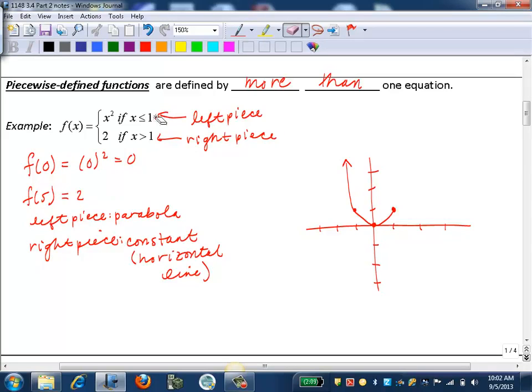So my domain of that left piece was negative infinity to 1. So we can even remind you and write that in interval notation, negative infinity to 1. So from negative infinity to 1, it looks like a parabola.